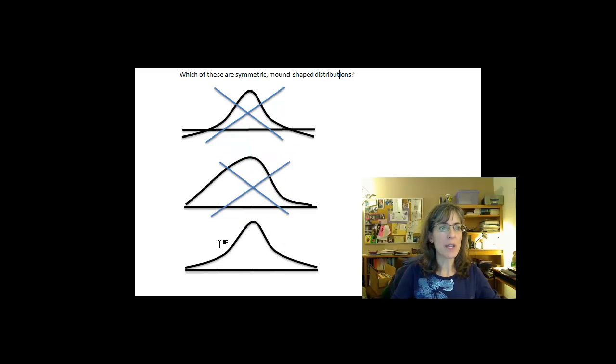Now, the last one I'm looking at looks like it is symmetrical. If I put my line of symmetry right there, it's exactly the same on both sides. It has that curve that we're looking for, and everything's above the axis, so we have all positive values. So that one is a symmetrical mound-shaped distribution, so I'll give it a check mark.